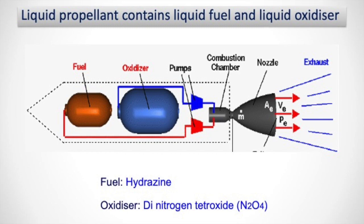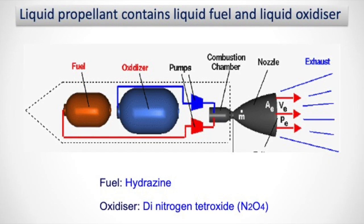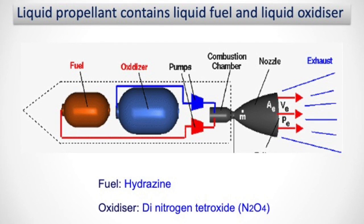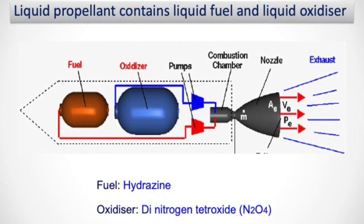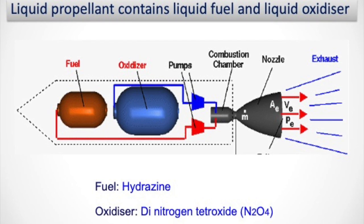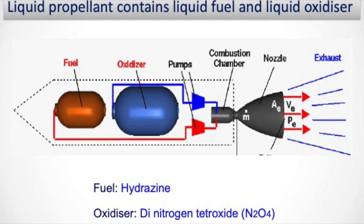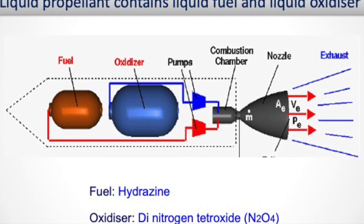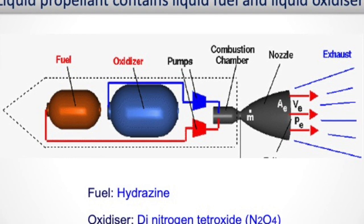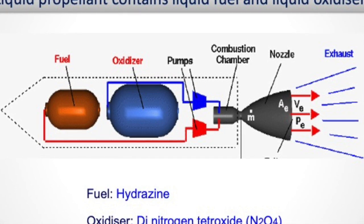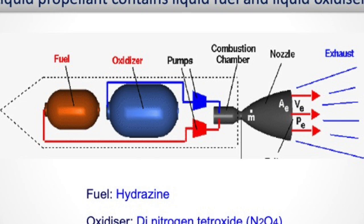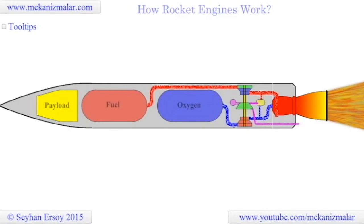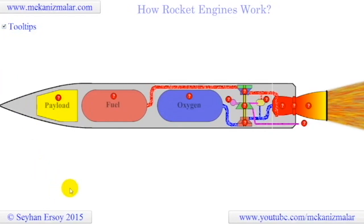Next is liquid propellant. In the picture you can see: a fuel tank, an oxidizer tank, a combustion chamber for burning the fuel and oxidizer, and a nozzle. In liquid propellant, the fuel and oxidizer are stored in different tanks, because when they come into contact they burn spontaneously. These are called hypergolic propellants. As an example, hydrazine is used as fuel, which is an alkali, and N2O4 is used as an oxidizer, which is an acid. The fuel and oxidizer from the separate tanks reach the combustion chamber through two different pipelines, burn, and the gas goes out through the nozzle.